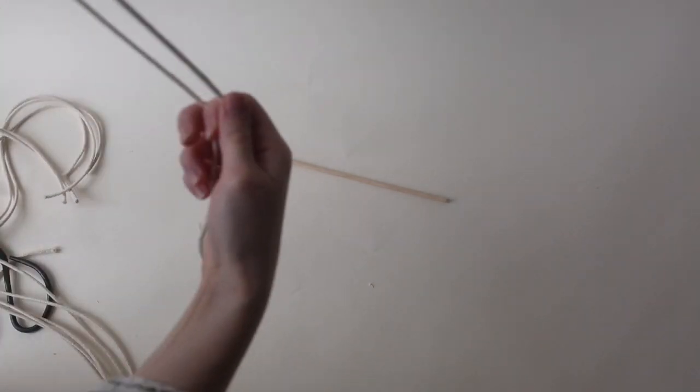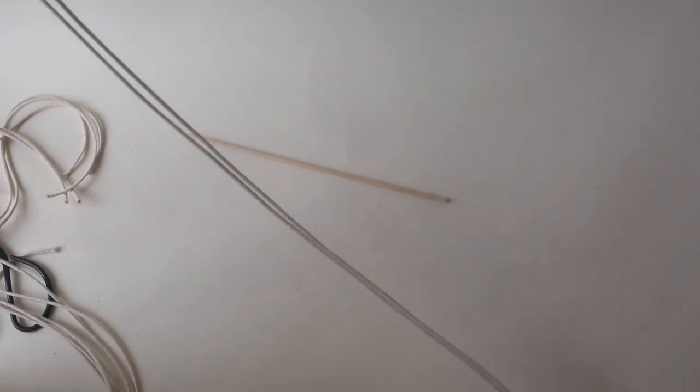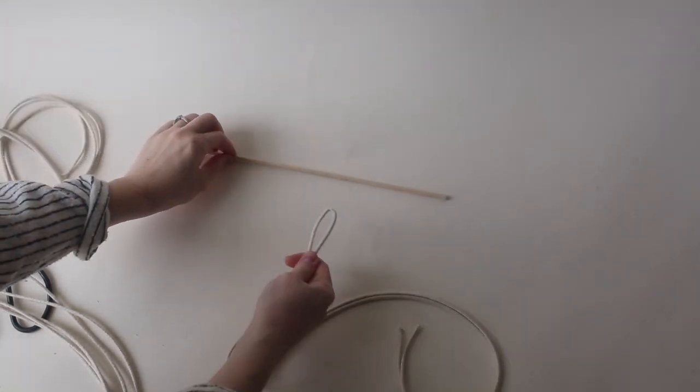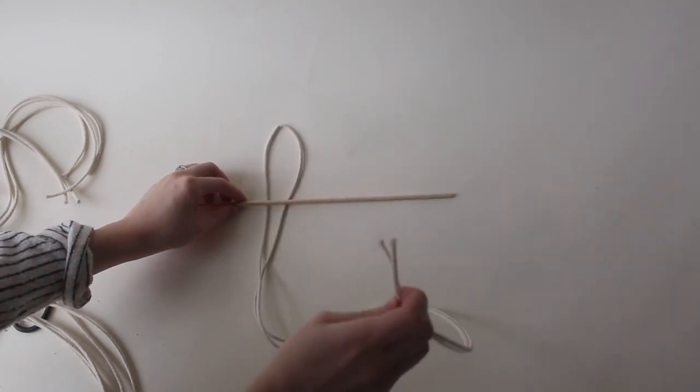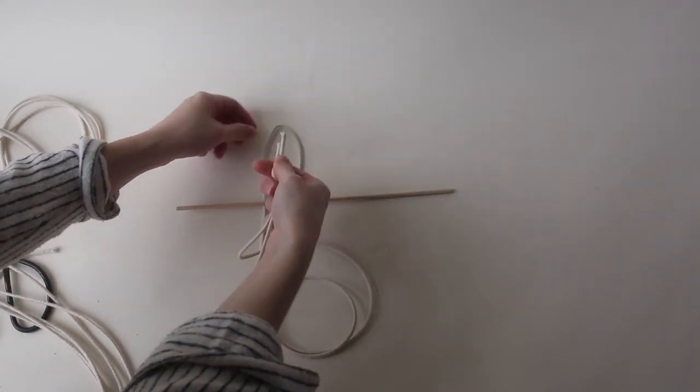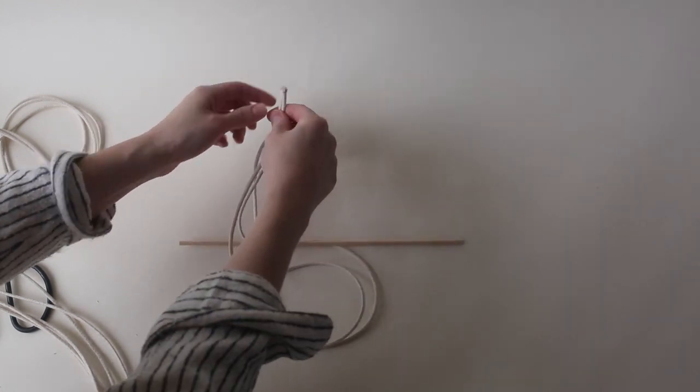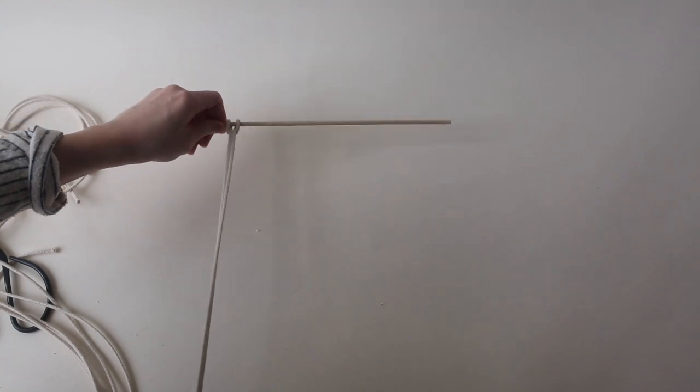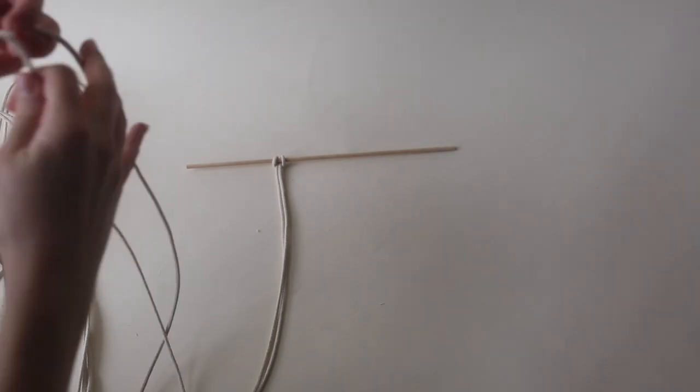What you're gonna do is pull your piece so that both of the ends are touching and you have a loop at the top. You're gonna lay your loop underneath the dowel just like this, and then take my two ends and put them through the loop. So over the dowel and under through the loop, and we're just gonna pull that tight. I'm gonna repeat this step with all of my pieces of macrame.